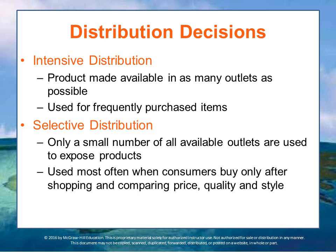A major distribution decision is how widely to distribute your products — how many and what types of retail and distribution channels you want carrying your product. The intensity of market coverage depends on buyer behavior, the nature of the target market, and competition. Intensive distribution makes a product available in as many outlets as possible. For convenience products like bread, milk, gasoline, soft drinks, and chewing gum, customers want a nearby location with minimal search time.